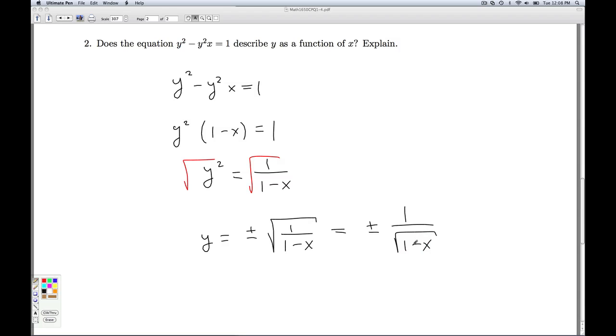Now, if I plug in a particular x value which makes everything happy here, for example, if I plug in x equals 0, what do I get out for y? I get plus or minus 1 over the square root of 1 minus 0, which simplifies to plus or minus 1. So for this x value, I'm getting two different y values, which means this does not describe y as a function of x. So no, for x equals 0, we get two different y values.